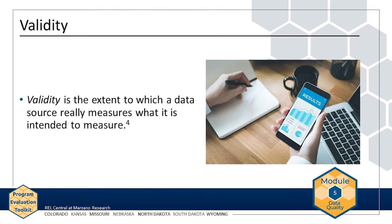Let's start by looking at validity. Module 3 covered the validity of an evaluation design. In the context of data quality, validity is the extent to which a data source really measures what it is intended to measure. In the AMP example, if the measure of students' math knowledge is their performance on a math placement test, the evaluation team should make sure that the test assesses math knowledge as opposed to knowledge in another subject, like reading comprehension. The data source should be designed in a way that allows the team to feel confident in assessing students' math knowledge.